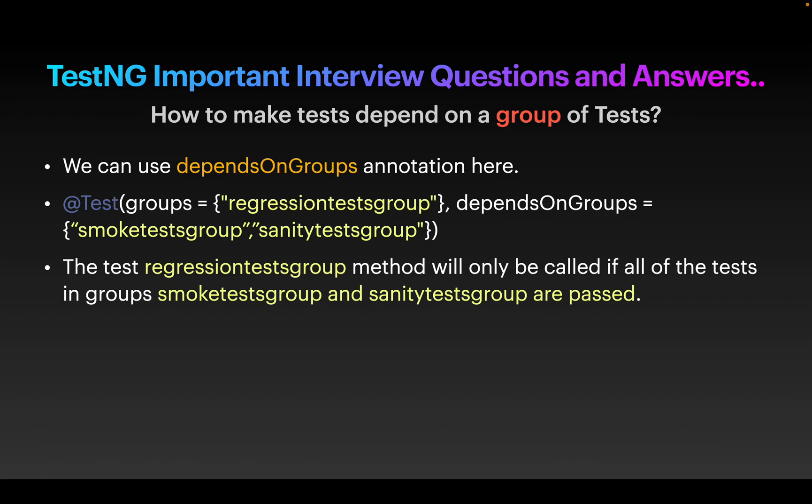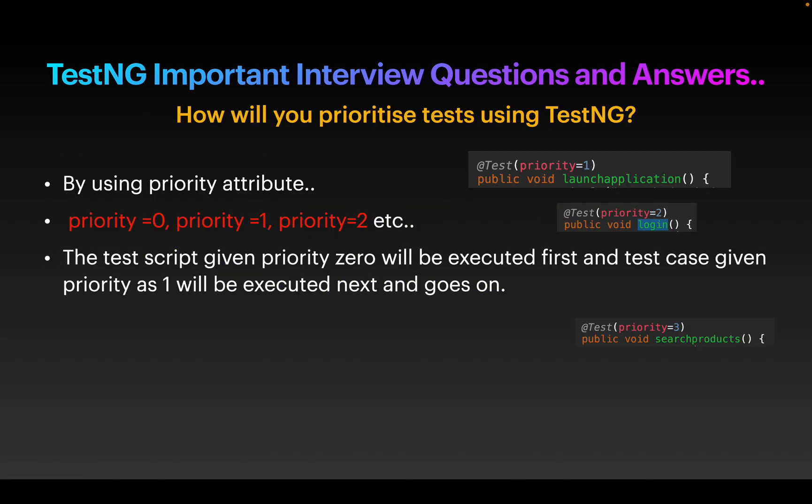Next question: how to make a test depend on a group of tests? Here it's about groups, not methods. Consider you have three groups — regression, smoke test, and sanity test — each potentially having hundreds of test cases. With the dependsOnGroups annotation we can make tests depend on other groups. For example, I declare smoke test group and sanity test group — only when these two groups pass will the regression test group execute.